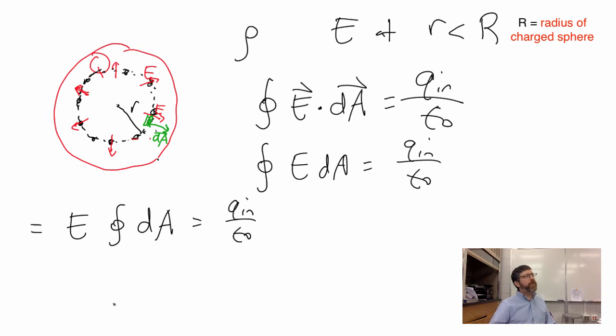Here's where common mistakes start to happen. Is the integral the area of my Gaussian surface or the area of my charged object? Gaussian surface area, 4π little r², choice one. Or 4π big R²? That dA is just part of the Gaussian surface. So this becomes E times 4π little r².